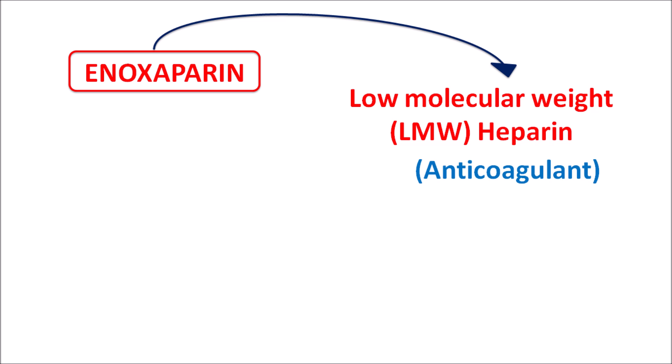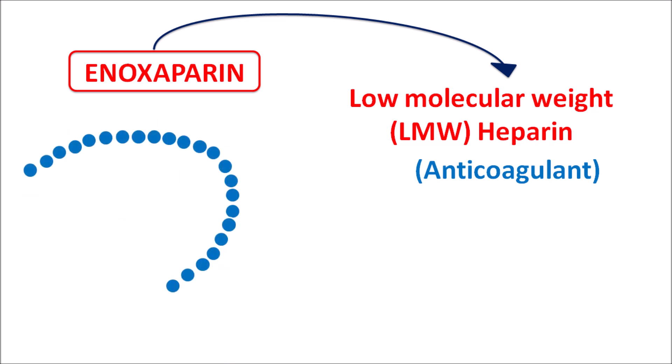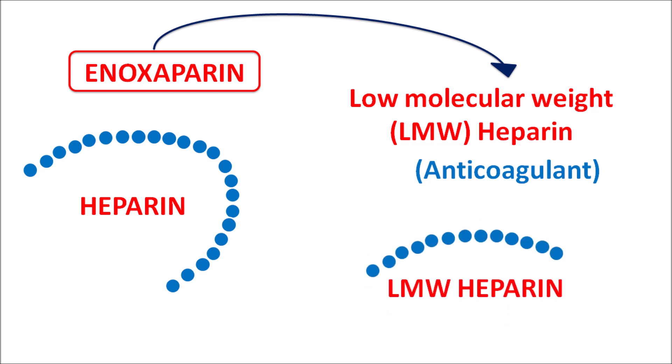Regular heparin has a high molecular weight chain, and because of this, heparin can produce specific side effects such as osteoporosis and heparin-induced thrombocytopenia. These are somewhat less observed with low molecular weight heparins. Low molecular weight heparins have less risk of osteoporosis, and their dose can be easily fixed as they follow pharmacokinetic techniques.